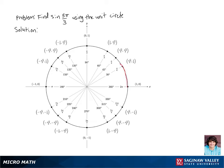Let's find sine of 5π/3 using the unit circle. We're going to start at the point (1, 0) on our unit circle and travel a distance of 5π/3 counterclockwise along our unit circle.